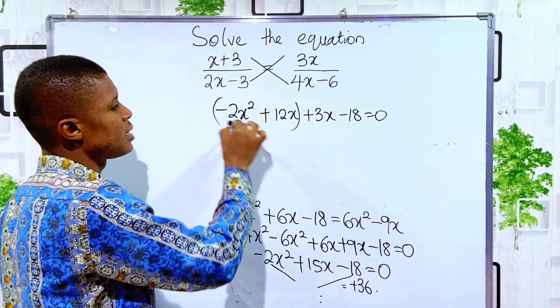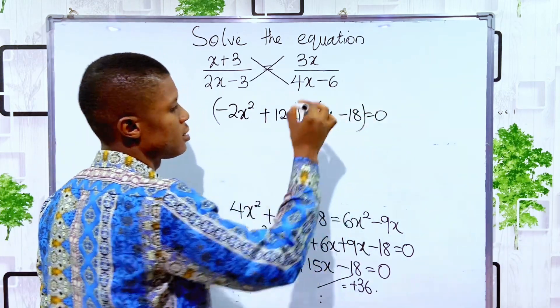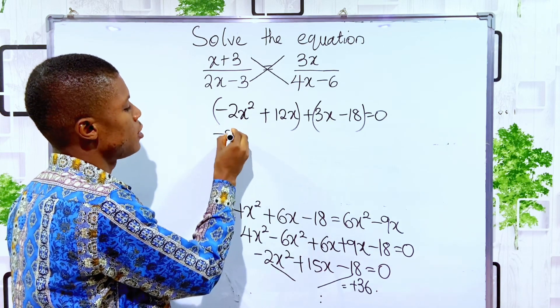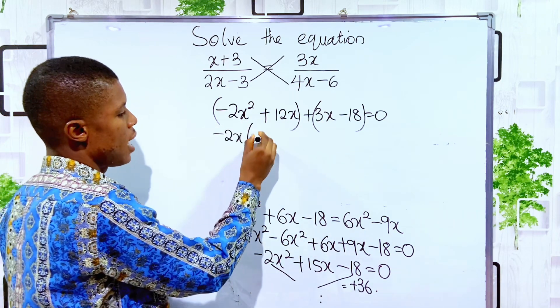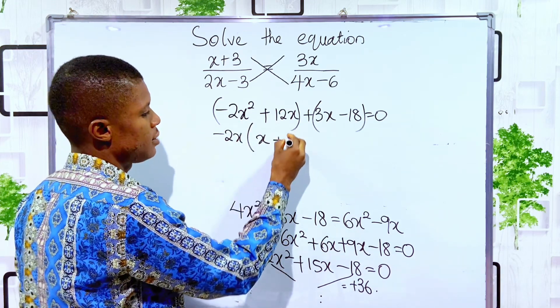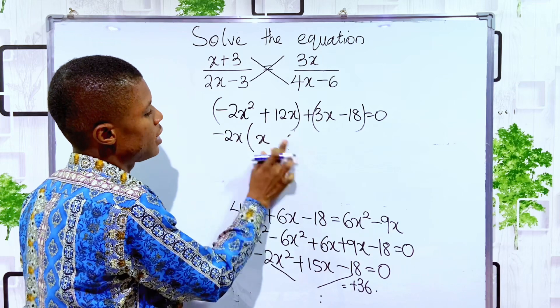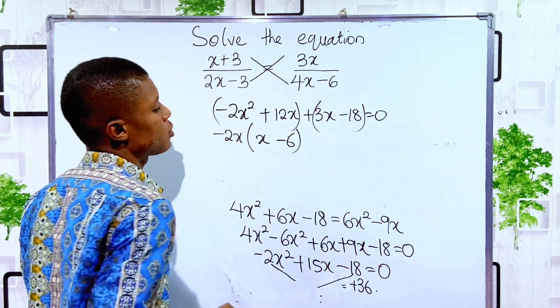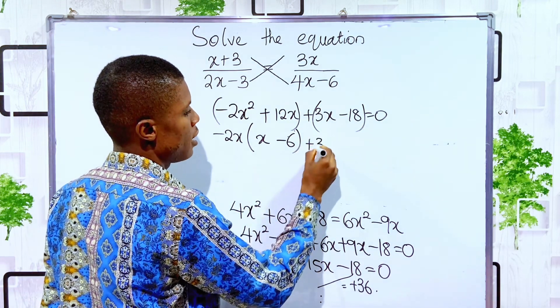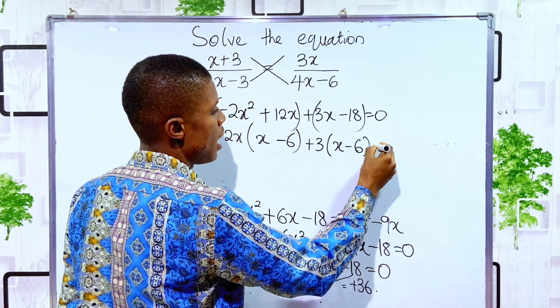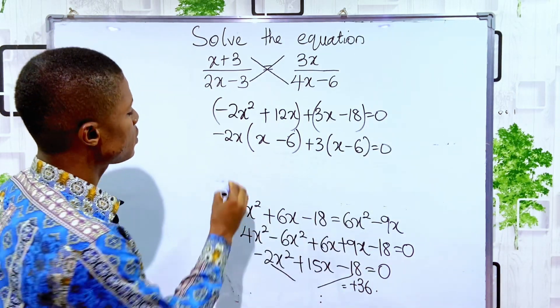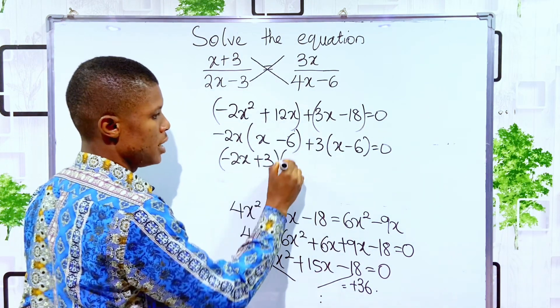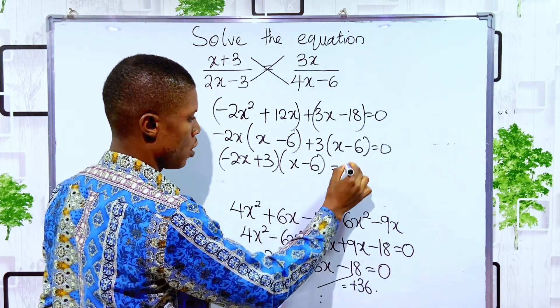Now we have to group. I'll group this first two and also group this last two. So here, the common term here is I can factor minus 2x. What is left? x plus 6. x, I factor that a negative. x minus 6. Into, here, I can factor out 3. Plus 3 into x minus 6. And it's 0. You can now see we have minus 2x plus 3 by grouping into x minus 6 equal to 0.